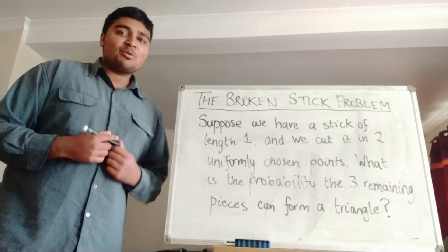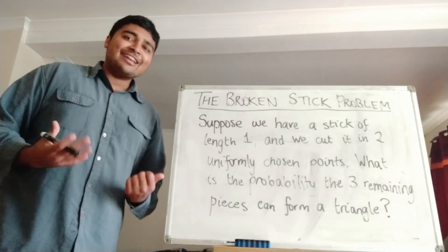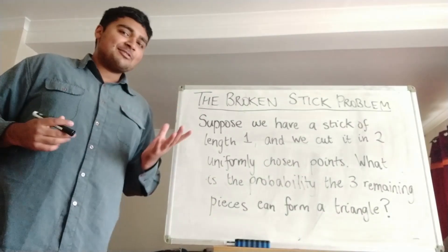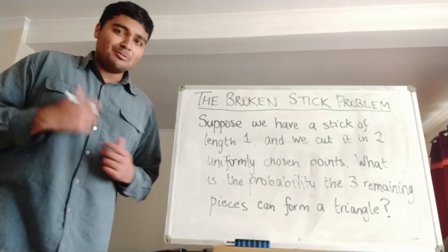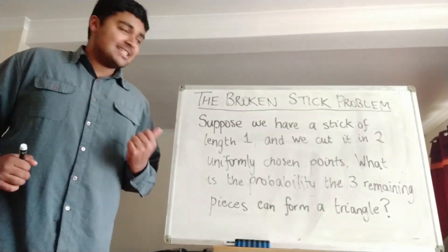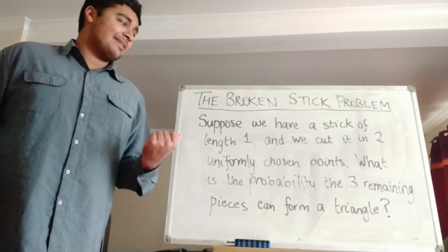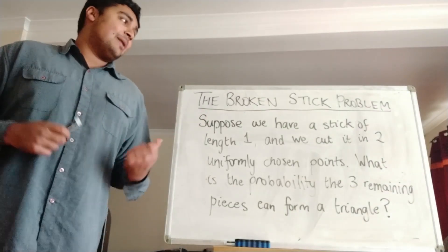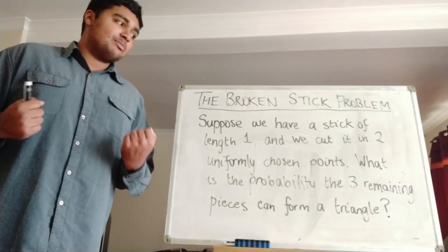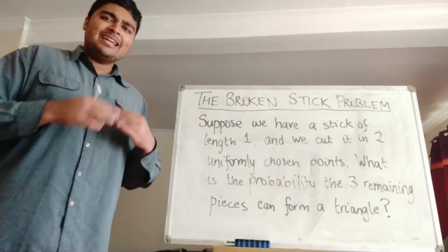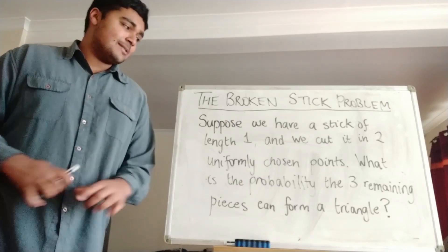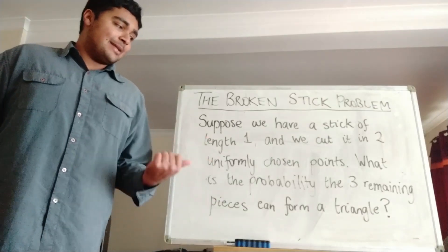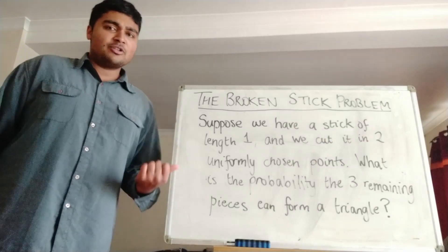Hi, thanks for joining me today. I'm going to go over a very fun and very classic problem from maths, and this falls in the territory of probability. This is known as the broken stick problem, and here's how it goes. Suppose we have a stick of length 1, and we cut it at two uniformly chosen points. What is the probability that the three remaining pieces can form a triangle?